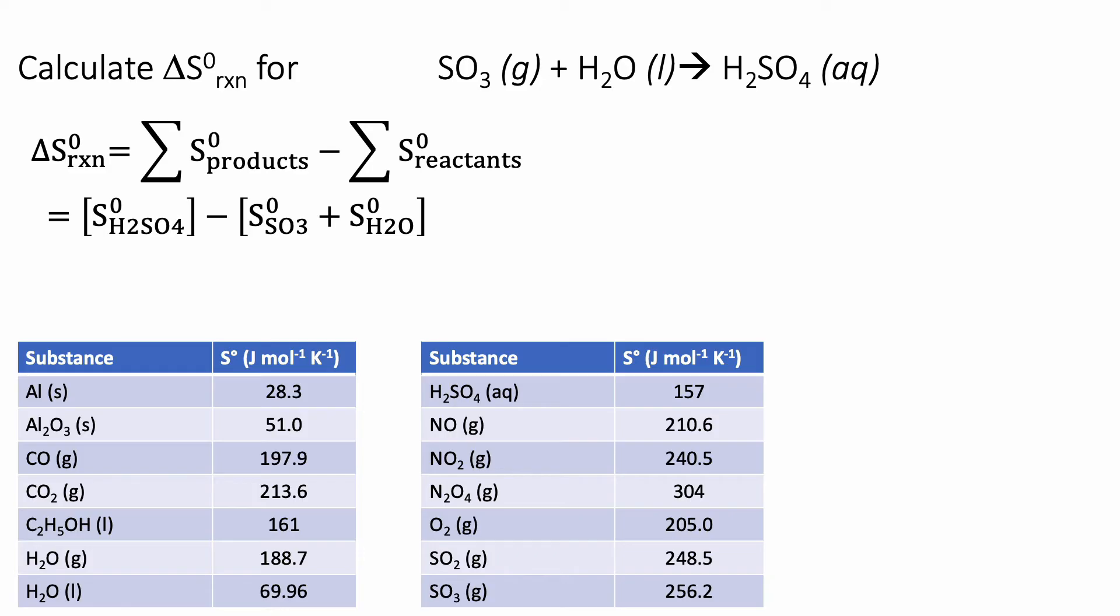But let's go through our table and identify what we need here. We have aqueous sulfuric acid, we have gaseous SO3, and then we have water. And you'll notice in this table, we have two different values for water, gaseous water and liquid water.